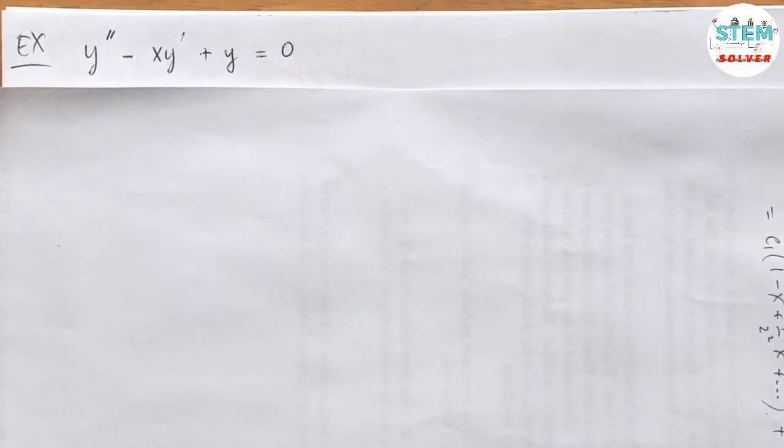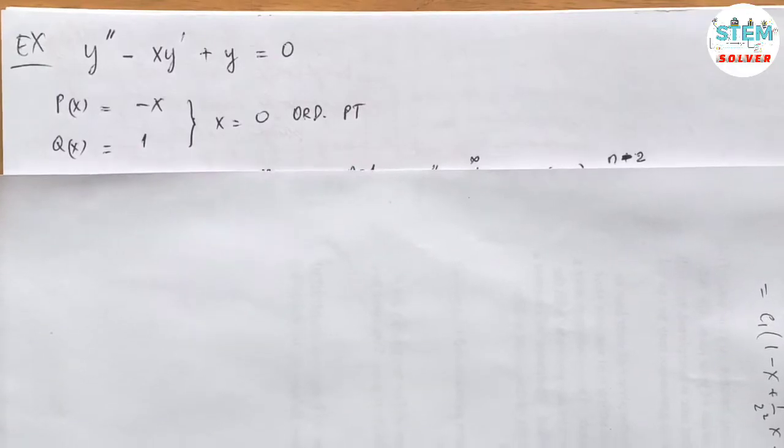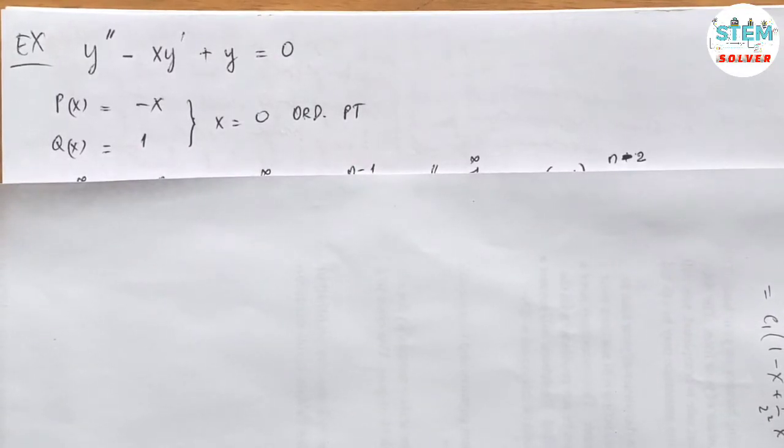First of all, let's check if x equal to zero is analytic. In order to do that, we are going to take a look at p of x and q of x. So p of x is equal to negative x and q of x is equal to one. So x equals zero is an ordinary point.